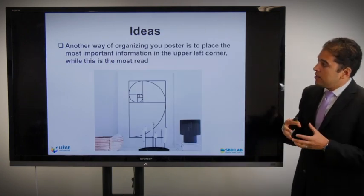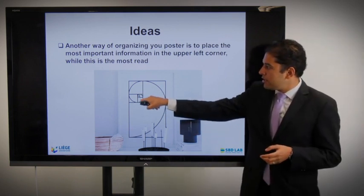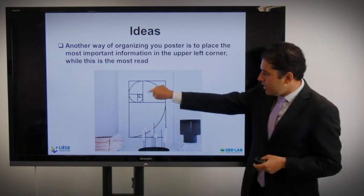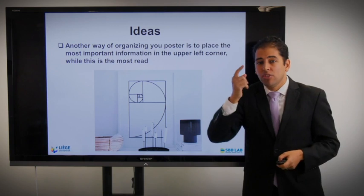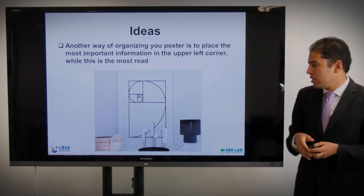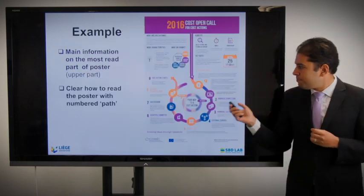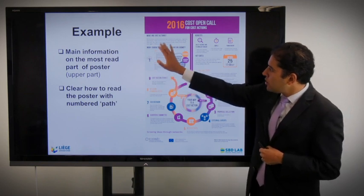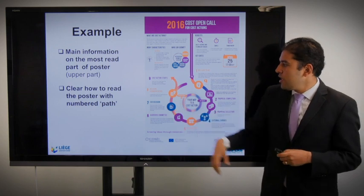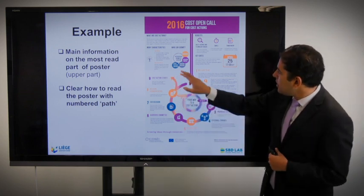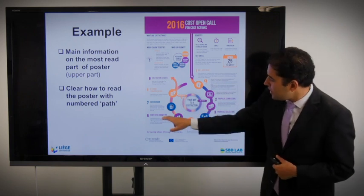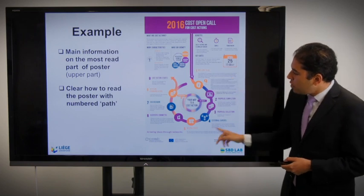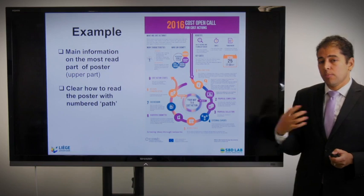Another way to organize your poster: place the most important information in the upper left corner — this is the most read area in any poster. Eye-tracking studies confirm that the upper left area takes the most visual attention subconsciously. Here is another good example: main information is in the most read part of the poster. There is a clear reading path with numbers — you start 1, 2, 3... up to 9. The designer created their own logic with a numbered sequence.